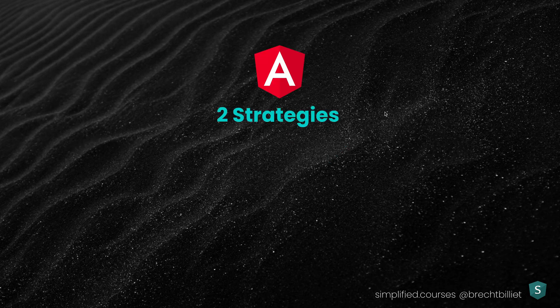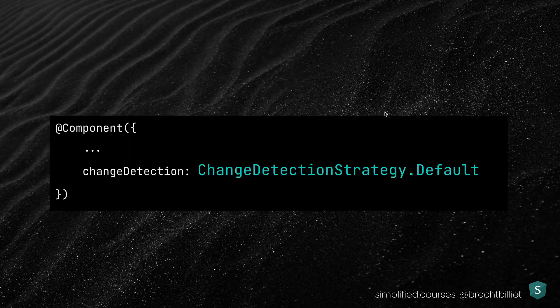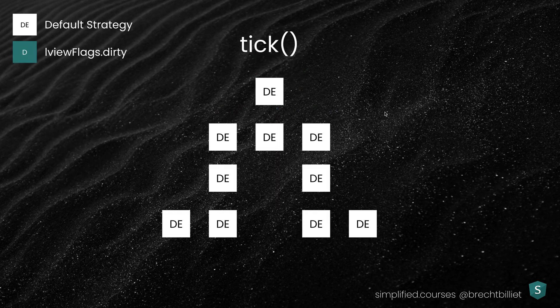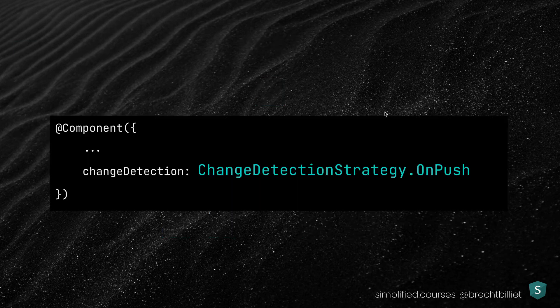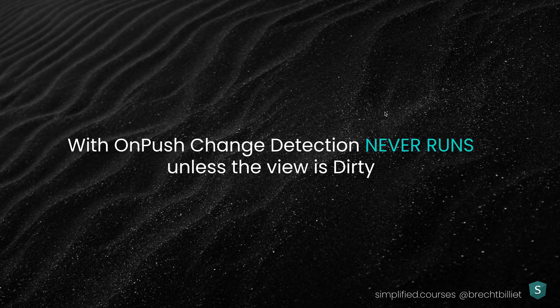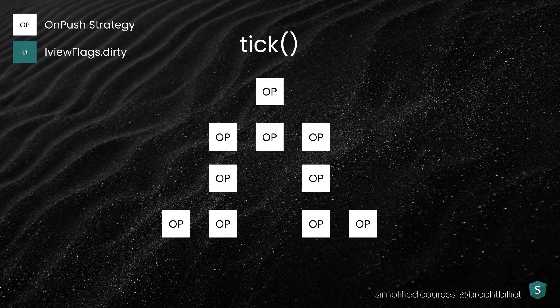In Angular, there are two strategies: the default strategy and the onPush strategy. With the default strategy, all views are checked — the refresh view method is called on the top view, then on child views, and so on. When using the onPush Change Detection strategy, it becomes more complex, because Change Detection never runs unless the view is dirty.